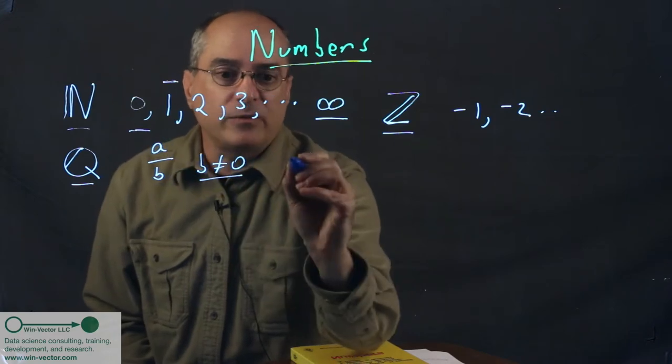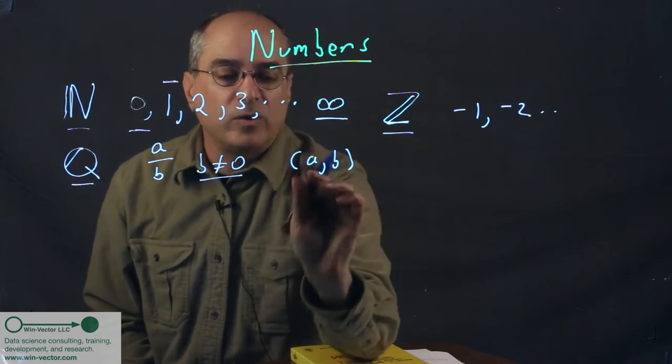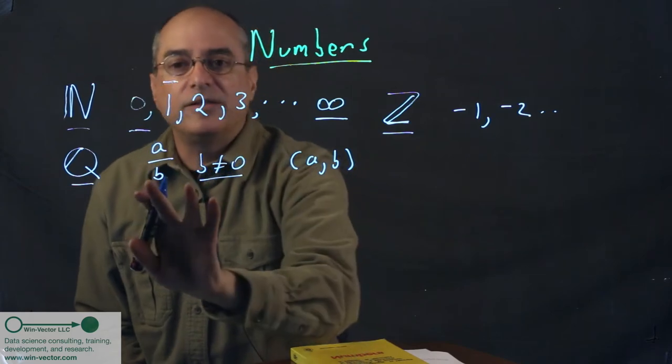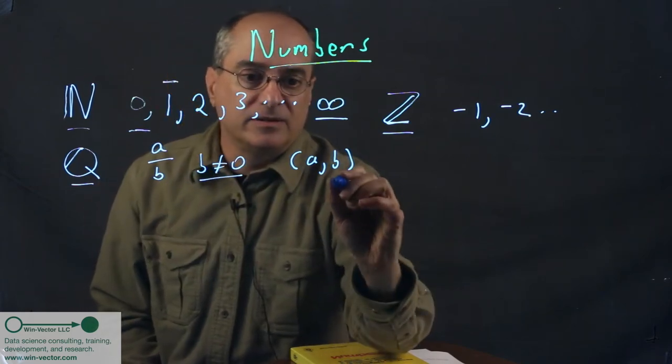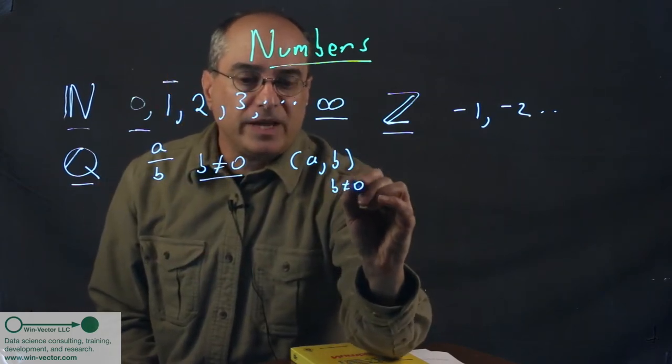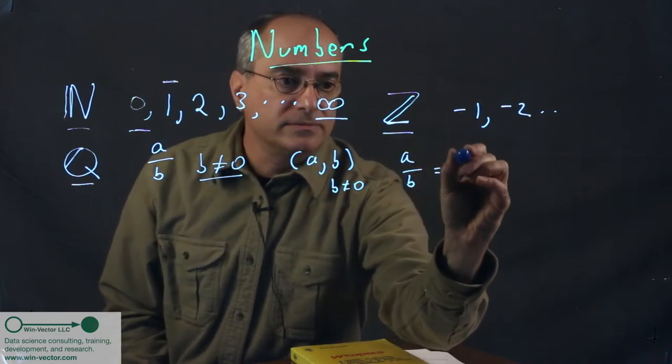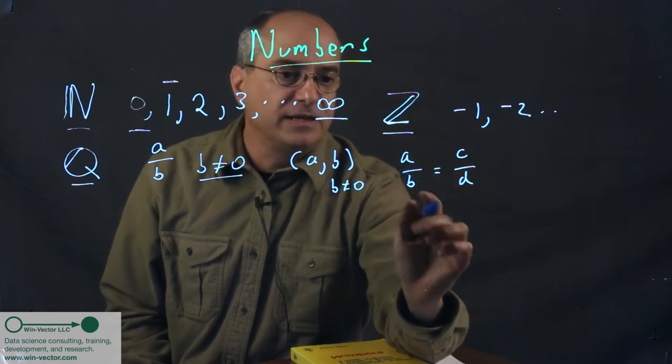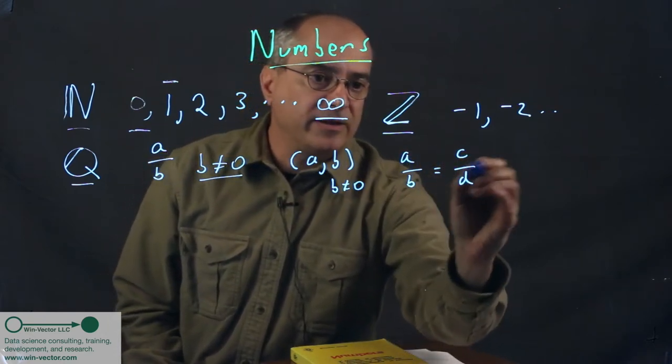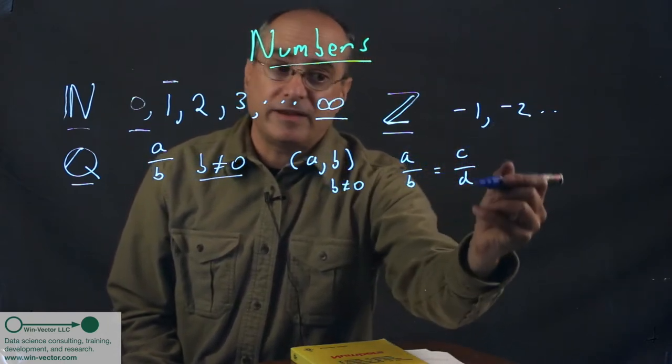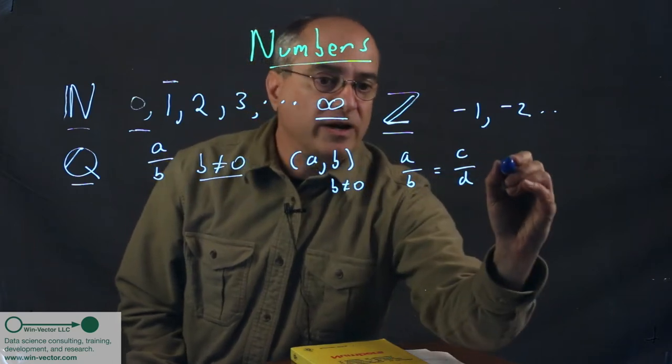So the rational numbers are all the numbers we can write as the fractions. We taught this way, but they're really all the pairs with this being what it is, this being our understanding of it. And we say two rational numbers are equal if the ratio of a to b is the same as c to d, or equivalently, a d equals b c.